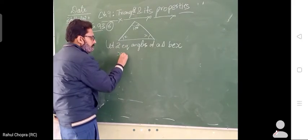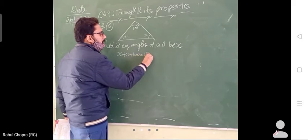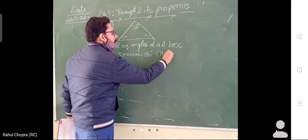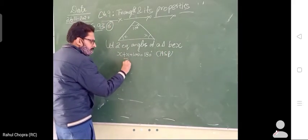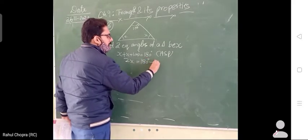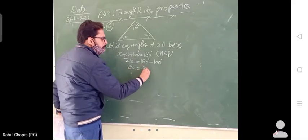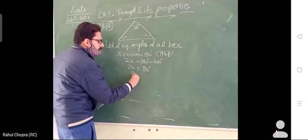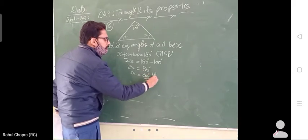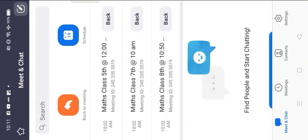So X plus X plus 100 is equal to 180 degrees, because of the angle sum property. X plus X becomes 2X, so 2X is equal to 180 minus 100, which means 2X is equal to 80 degrees. Therefore X is equal to 80 divided by 2, which gives 40 degrees.